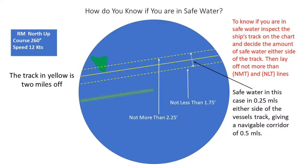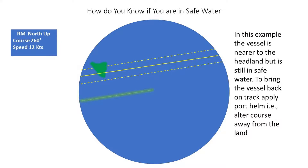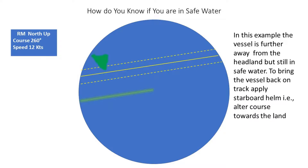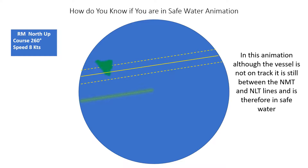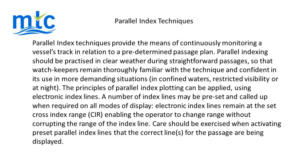Safe water in this case is a quarter of a mile either side of the vessel's planned track, giving a safe navigable corridor of half a mile. The not-less-than line is 1.75 miles and the not-more-than line is 2.25 miles. In the examples shown, whether the vessel is nearer to or further from the headland, as long as it remains between the not-more-than and not-less-than lines, it is still in safe water.